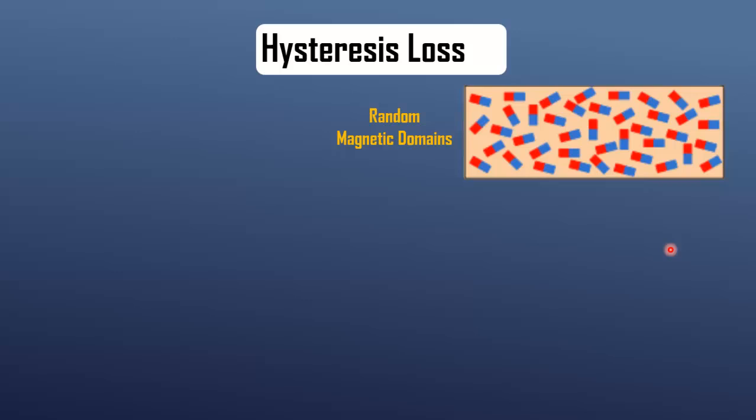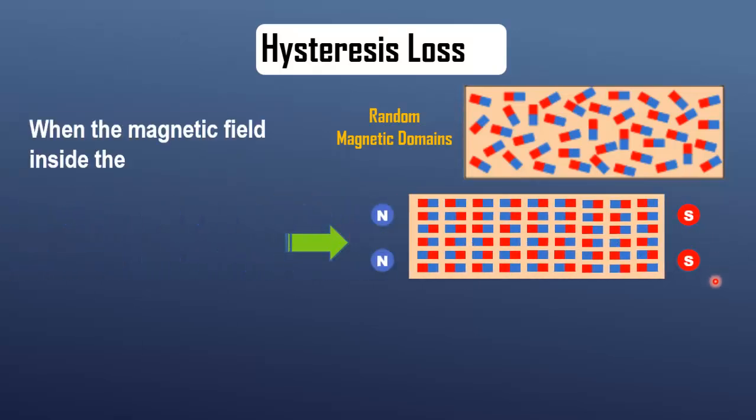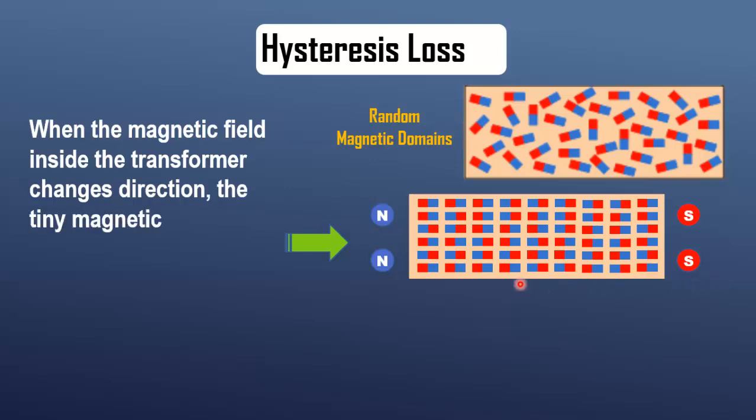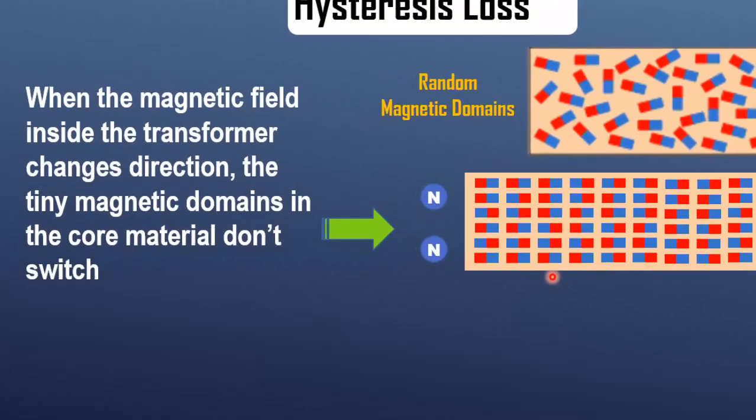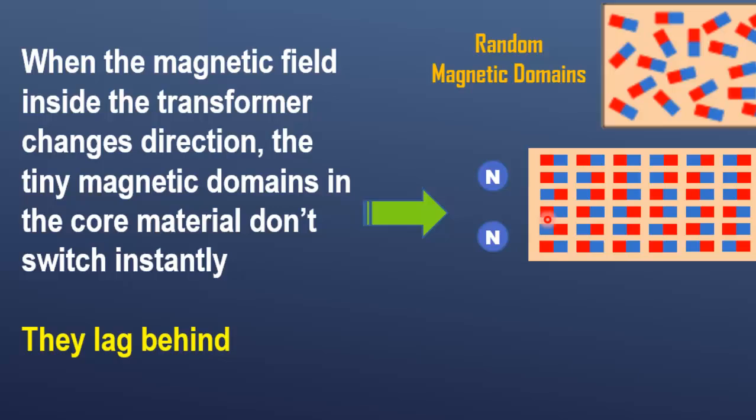Next, let's talk about hysteresis loss. This is a bit different. When the AC magnetic field changes direction, the magnetic domains in the core material don't instantly follow the magnetic field. They lag behind.